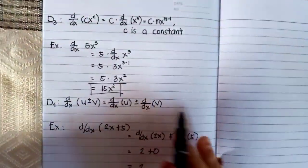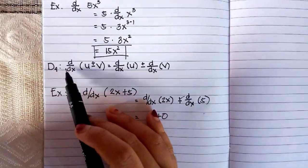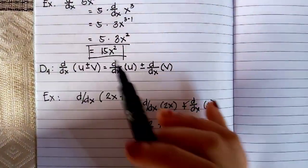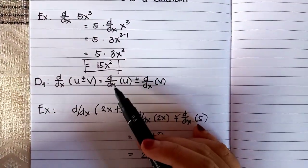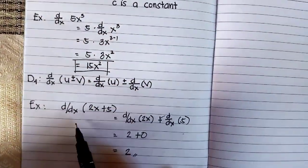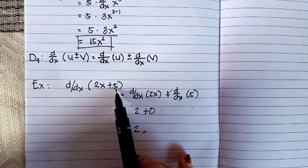Next is D4: d/dx of U plus minus V equals d/dx of U plus minus d/dx of V.